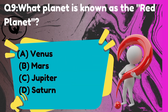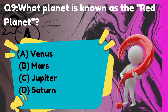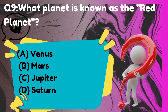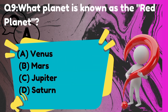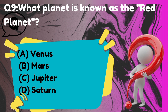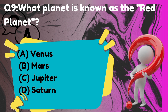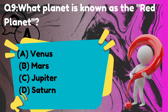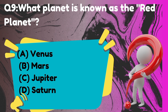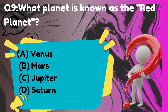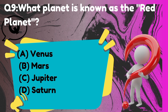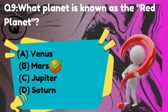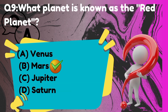What planet is known as the red planet? The correct answer is option B: Mars.